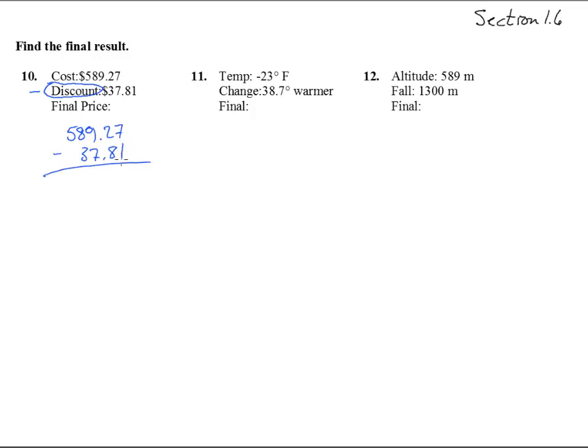So we subtract, 7 minus 1 is 6, 2 minus 8, can't do that. That goes down to an 8, and it brings 10 over. Now as a reminder, when we did fractions, we might borrow 13ths, or 15ths, or 23rds, or whatever. This is the perfect opportunity to say, this is in the tenths column. When we exchange 1, we get 10 tenths, and so we actually did a plus 10. That's where we get the 12. So 12 minus 8 is 4, 8 minus 7 is 1, 8 minus 3 is 5, and 5 minus 0, 551.46. Don't forget the dollar sign on there.